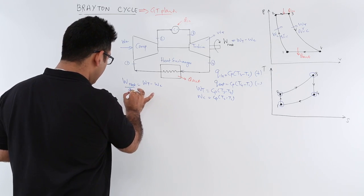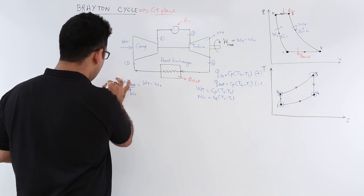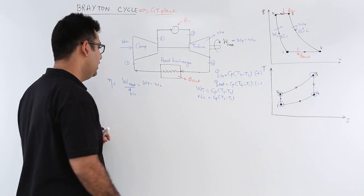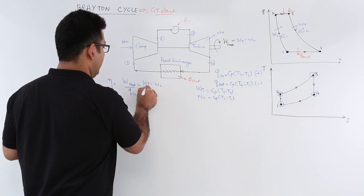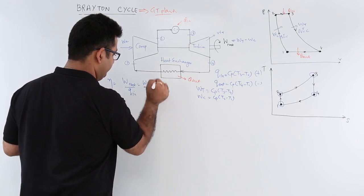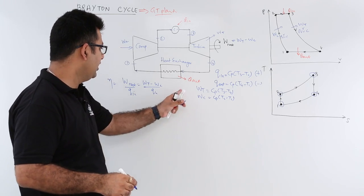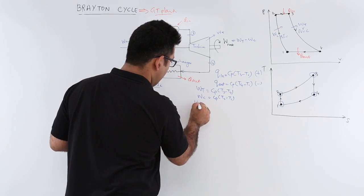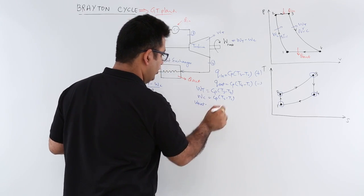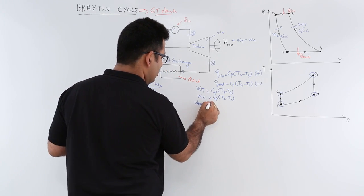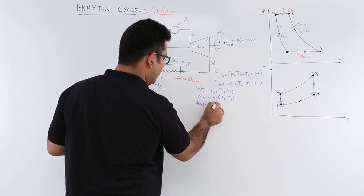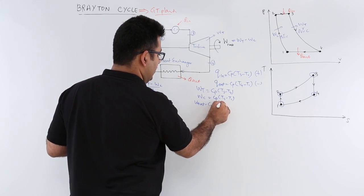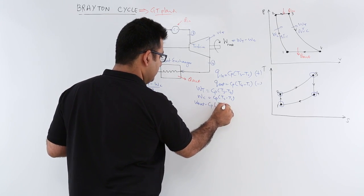Dividing W_net by Q_in gives the efficiency of the Brayton cycle. Writing out W_net, we subtract the two work terms. Since cp is constant across both terms, we can factor it out, giving cp times (T3 minus T4 minus T2 plus T1).